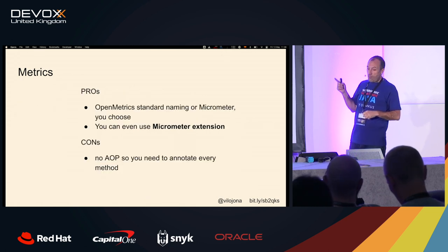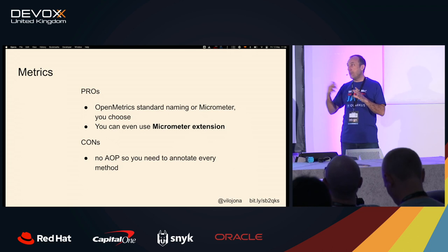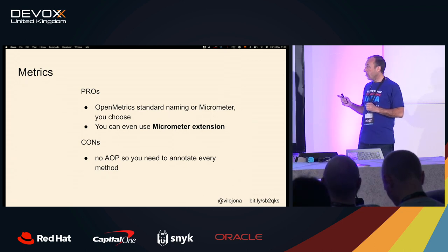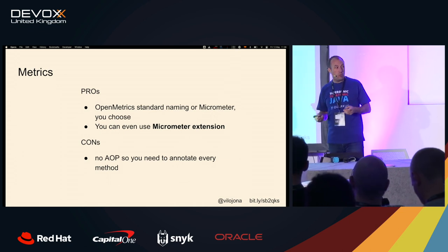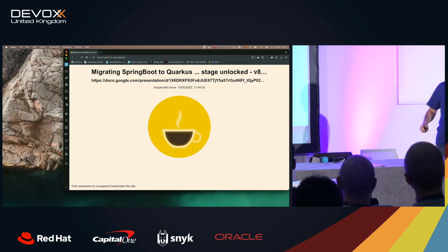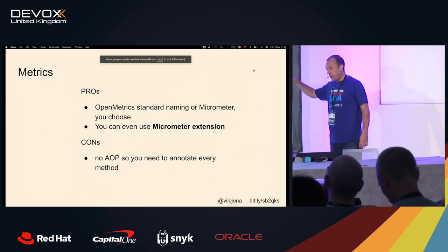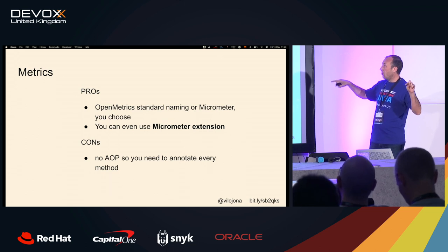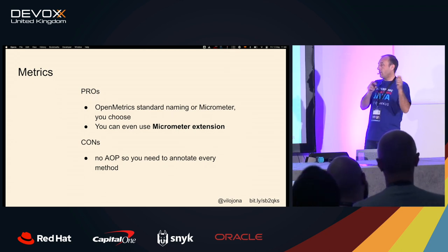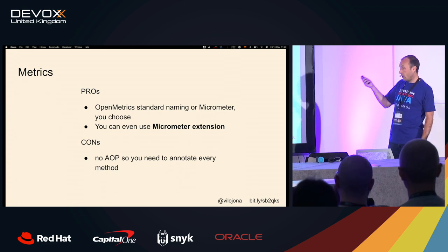In Spring, this project was using Aspect-Oriented Programming — it's very easy to get information with expressions using wildcards. We don't have AOP in Quarkus. One way is to annotate every method with MicroProfile annotations. In my case, I was using the MicroProfile metrics extension with the property for Micrometer compatibility, but I could have simply used the Micrometer extension and then everything works fine, because it also detects the same annotations.